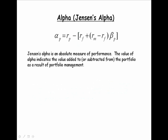Now, alpha, also known as Jensen's alpha, is also a measure of performance. It is a measure of portfolio performance, but it is an absolute measure of portfolio performance. We can look at the value of alpha, and that will specifically indicate the value that was added to or subtracted from the portfolio as a result of portfolio management.